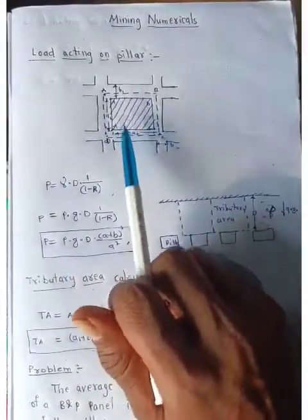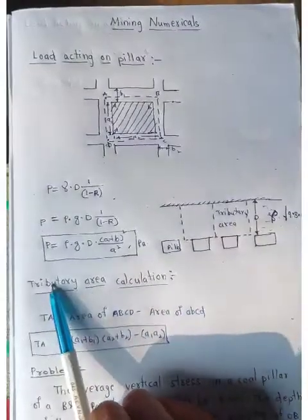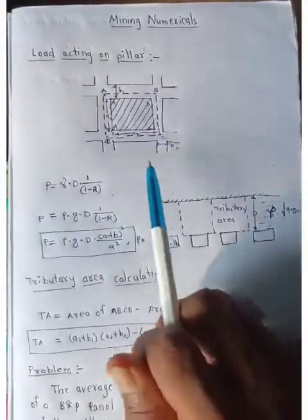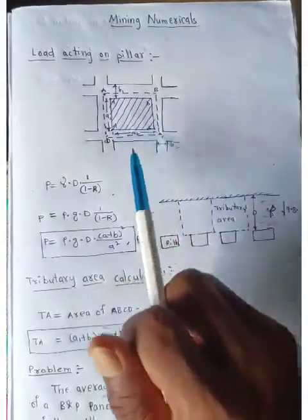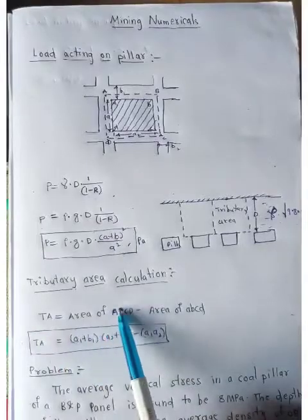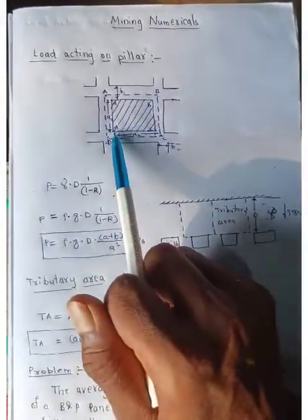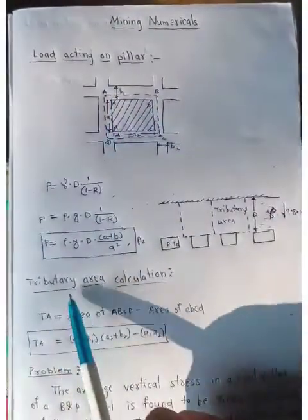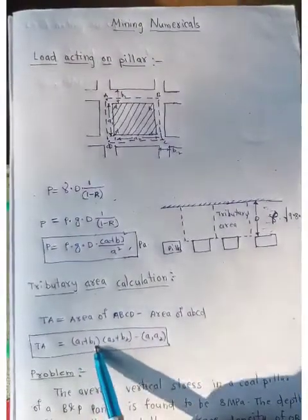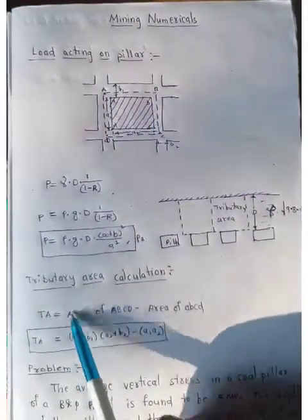As you can see in the figure, everything is labeled. Now, the tributary area is the area which is developed due to the formation of galleries in an underground mine. It equals the large area ABCD minus the small area abcd. This gives us the tributary area formula: (a + b)² − a², where (a + b) is the center-to-center distance side and a is the solid pillar side. For a rectangular case, it is (a₁ + b₁)(a₂ + b₂) − a₁ × a₂.